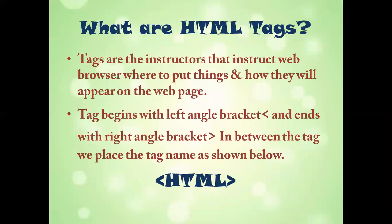Now what are these tags? Tags are basically instructions that instruct the web browser where to put things and how they will appear on the web page. For example, if I am writing a paragraph on my web page, what will be the appearance of that paragraph — whether it will be red in color, what will be the font color, what will be the font size — everything related to how it will appear on the web page will be decided by the tags.